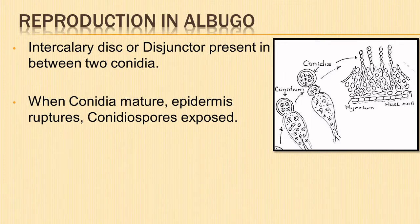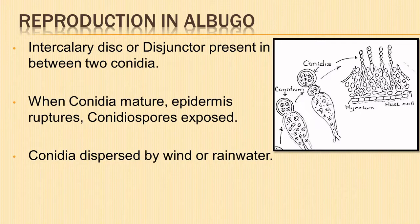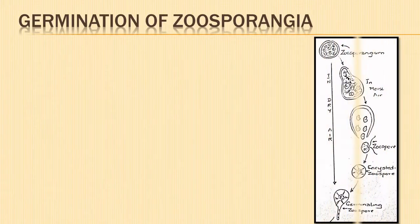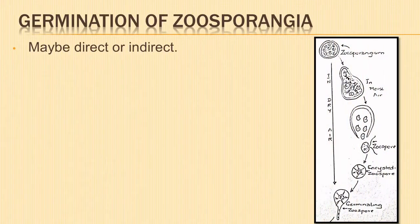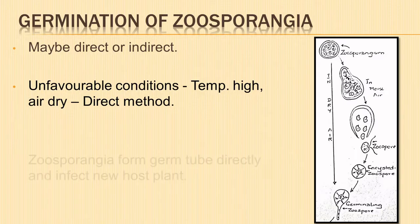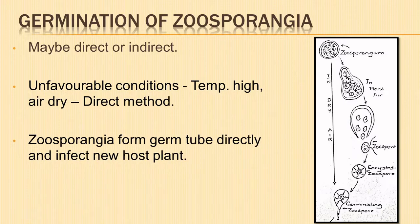The mass contains numerous conidia or conidiosporangia or zoosporangia, which are dispersed by wind or rainwater. Each conidium is a spherical, multi-nucleate structure with dense cytoplasm and thin wall. Germination of the zoosporangia may be direct or indirect depending upon the environmental conditions. During favorable conditions when the temperature is high and the air is dry, the zoosporangia do not divide but germinate directly by forming a germ tube.